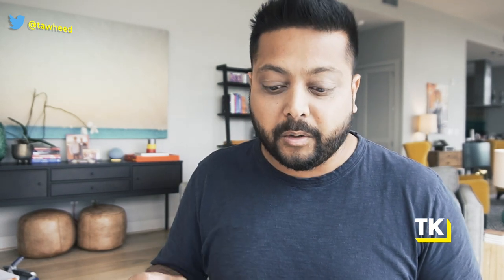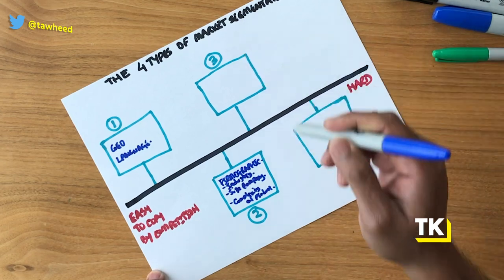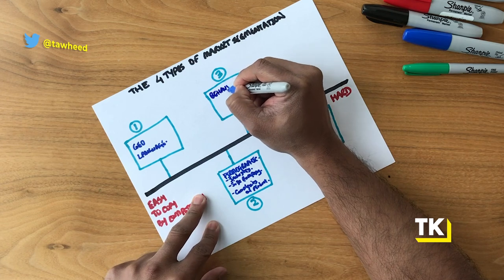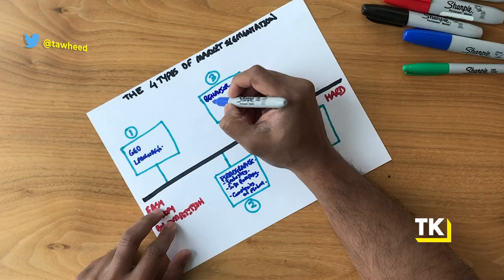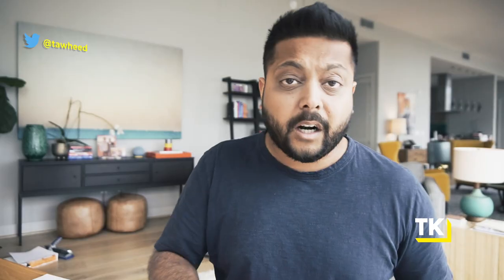The third type of market segmentation is behavior — essentially the behavior of your buyer or that market segment. They may have certain tendencies and preferences. For example, they may be price sensitive, or they may actually not be price sensitive at all — they literally just want the highest priced, most premium thing so they can be rest assured they're getting the best. That's a perfectly good way to segment the market between the price-conscious part and the part that wants to overpay for quality.